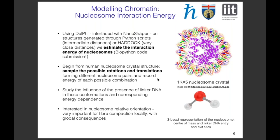We begin from the human nucleosome crystal structure 1KX5 — the industry standard used for the study of chromatin, though the histones are not actually human. We use this to sample the possible rotations and translations, forming different nucleosome pairs, and record the energy of each combination. We also study the influence of linker DNA in these conformations and record the energy dependence of different linker DNA configurations.